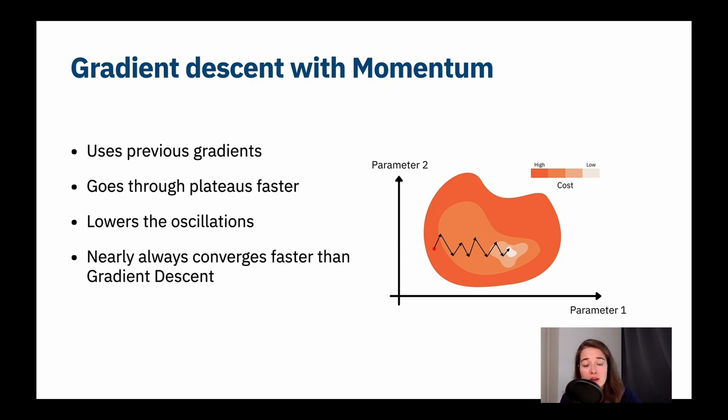So the first one is gradient descent with momentum. What momentum does, let's talk about it intuitively at first. So this is what we have, right? This is how parameter two and parameter one affects the cost. So if I am in this area with this dark orange area, the parameter one and parameter two values are in this dark orange area, then my cost is the highest. And as the color gets lighter, I'm going to get a better cost. If you are using gradient descent, this is what's going to happen. Let's say we're using minibatch gradient descent. So we're going to oscillate a little bit left and right, but we're going to be able to find a minima.